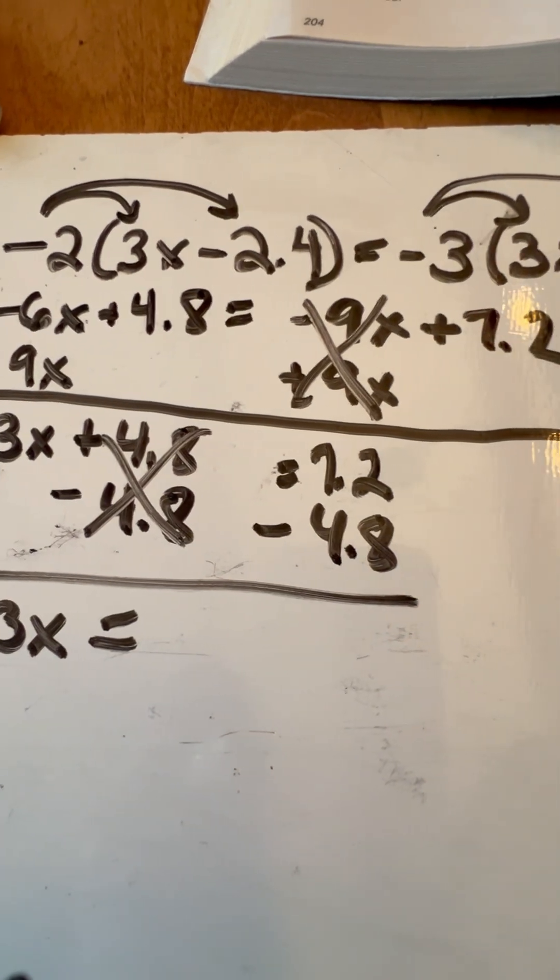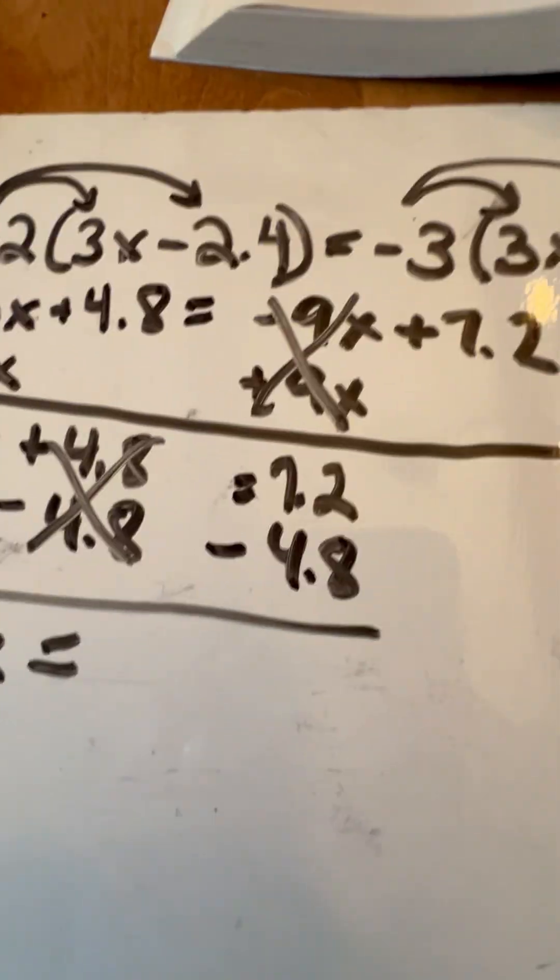We're going to be left with the 7.2 minus the 4.8, and when we do that, we're left with 2.4, which should make sense.